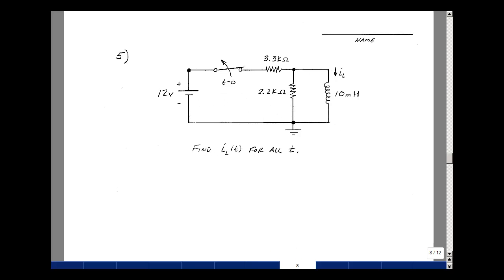For this problem, which has a single-pole, single-throw switch and a single inductance, can you find the current in the inductor for all time?